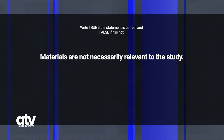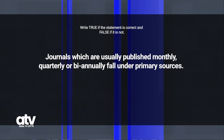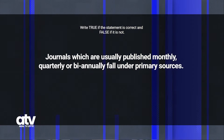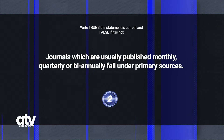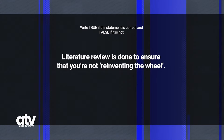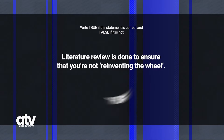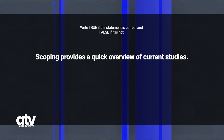Statement 2: Materials are not necessarily relevant to the study. Statement 3: Journals, which are usually published monthly, quarterly, or biannually, fall under primary sources. Statement 4: Literature review is done to ensure that you're not reinventing the wheel. Statement 5: Scoping provides a quick overview of current studies.